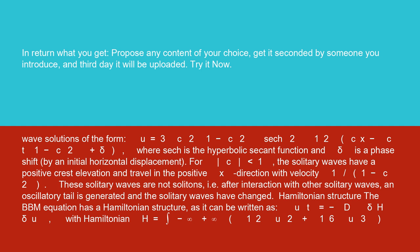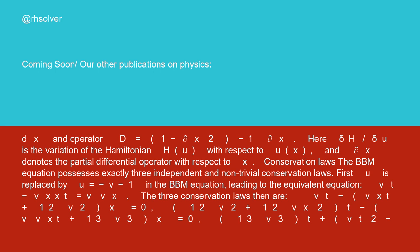Hamiltonian structure: the BBM equation has a Hamiltonian structure, as it can be written as ut equals minus d delta h delta u, with Hamiltonian h equals integral from minus infinity to plus infinity of one-half u squared plus one-sixth u cubed dx, and operator d equals 1 minus del x squared to the minus 1 del x. Here delta h over delta u is the variation of the Hamiltonian h with respect to ux, and del x denotes the partial differential operator with respect to x.